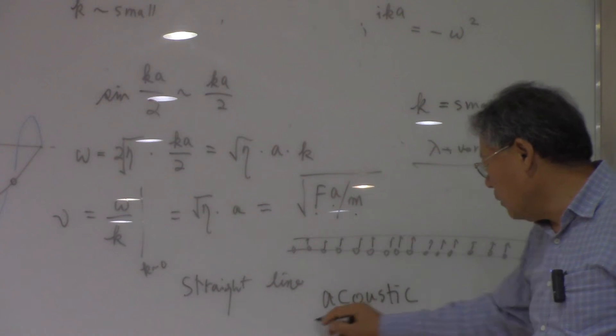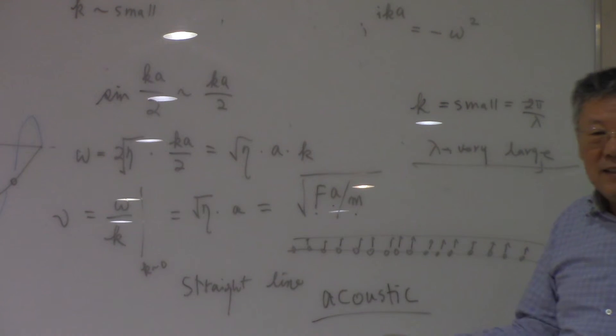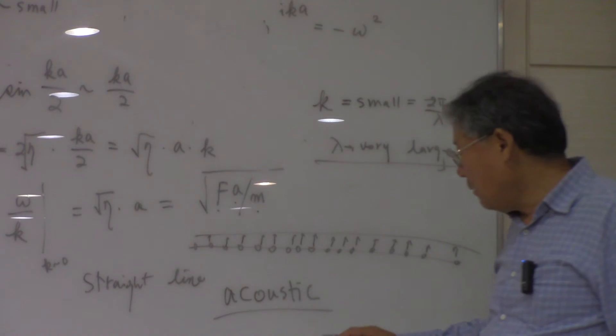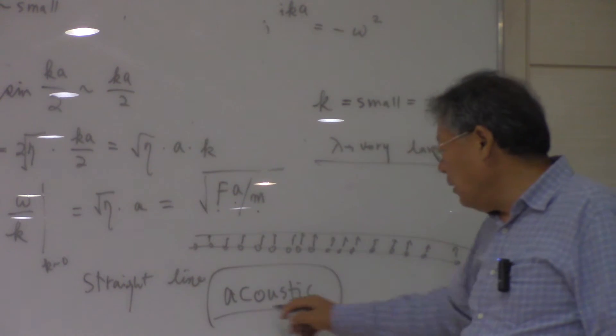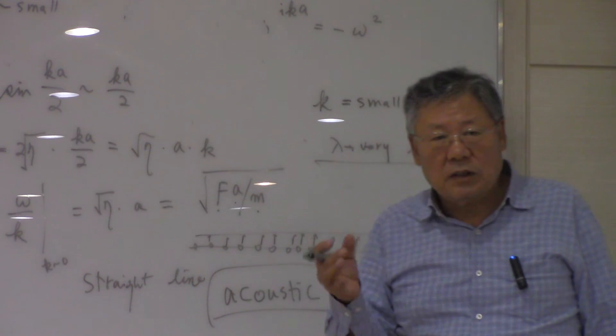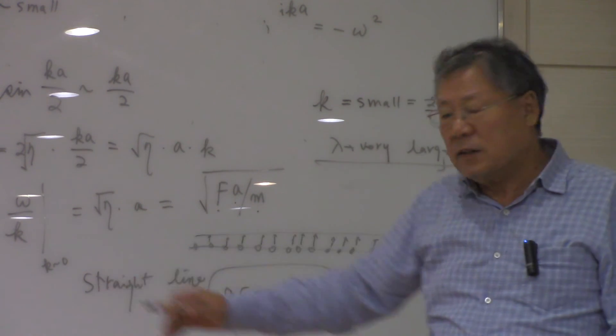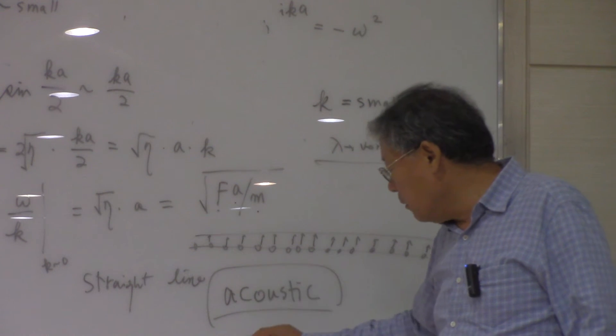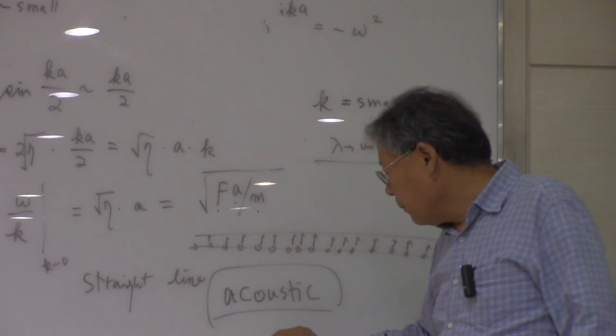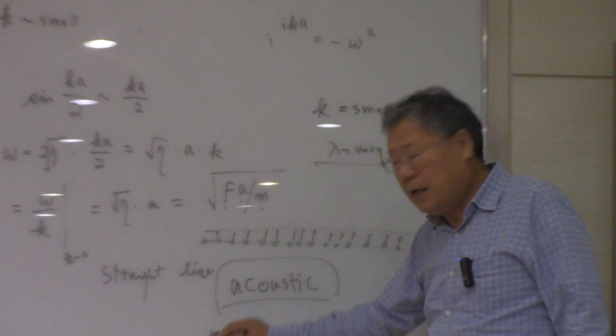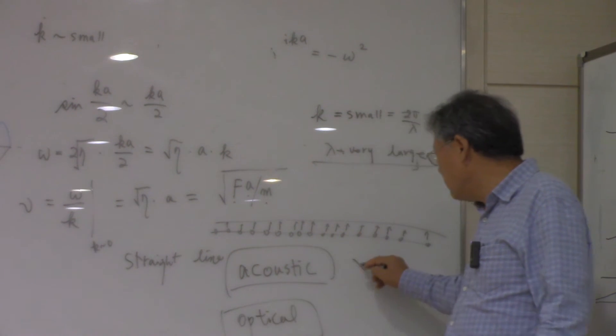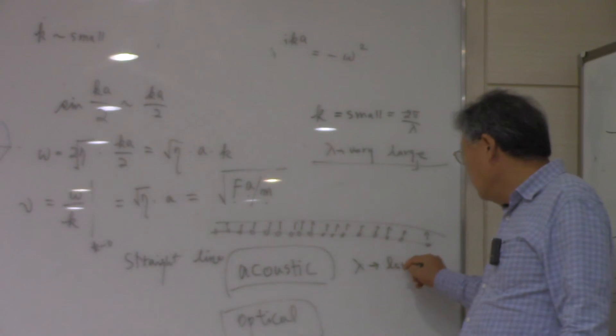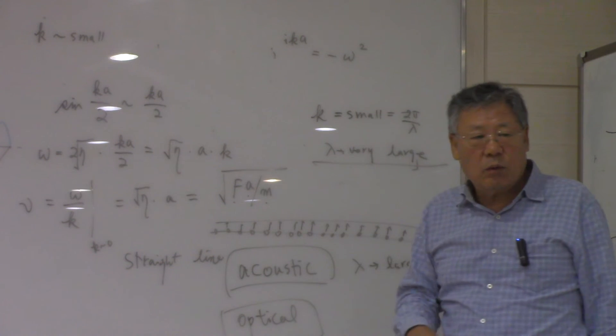Why do we call this acoustic? It's nothing related to sound. We just named it acoustic wave because the acoustic sound wave has a long wavelength compared to the optical wave. So when lambda is large, we just call that acoustic wave.